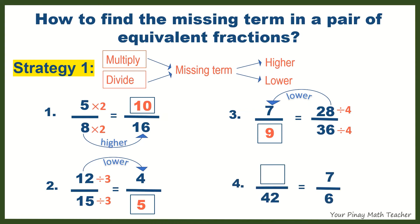Number 4: Blank over 42 is equal to 7/6. Again, the complete term fraction is on the right. 6 gets higher to 42. Therefore, it follows that you have to multiply 6 by a certain number, which is 7, to get 42. Do the same with the numerator 7, so the missing term is 49.